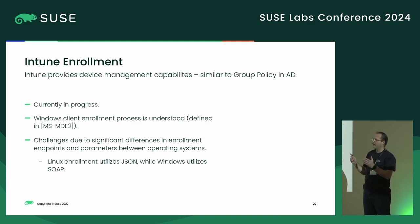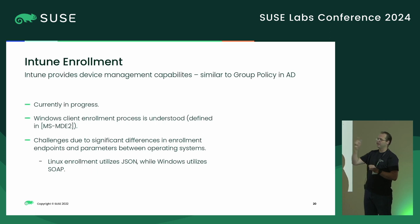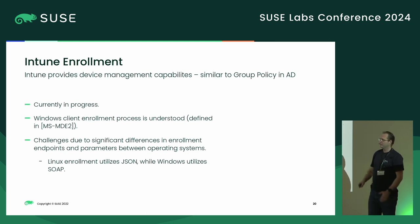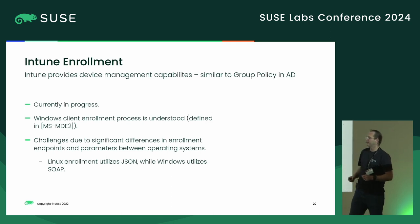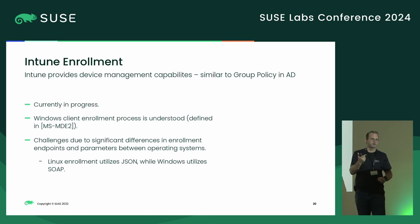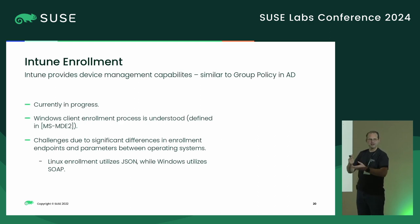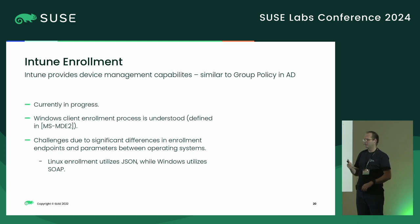I'm trying to work on Intune enrollment. The problem is Microsoft actually heavily documents how you enroll a Windows device in Intune, and that documentation is correct — but there's a specific field asking what type of device you're joining, and the only options are Windows and Windows Phone, which doesn't even exist anymore. I tried entering various options and nothing works — it will only accept Windows and Windows Phone.